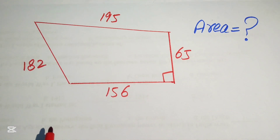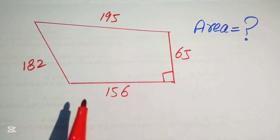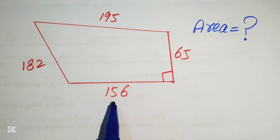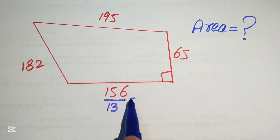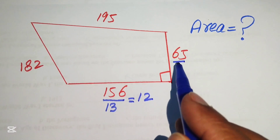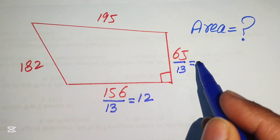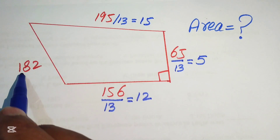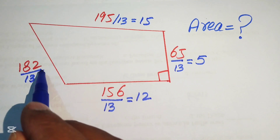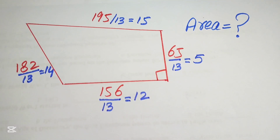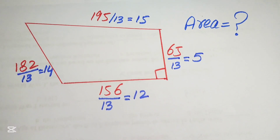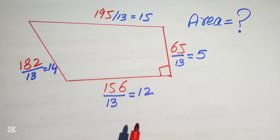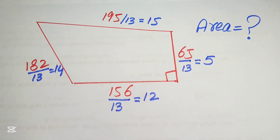Notice that each side length is divisible by 13. Dividing each by 13: 156 ÷ 13 = 12, 65 ÷ 13 = 5, 195 ÷ 13 = 15, and 182 ÷ 13 = 14. So we simplify all sides into their lowest form: 12, 5, 15, and 14. Now we move toward finding the area of this quadrilateral.